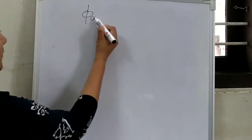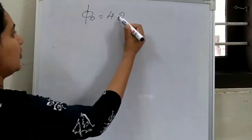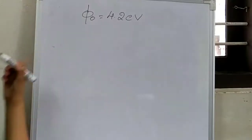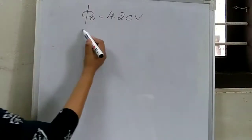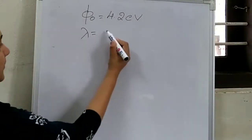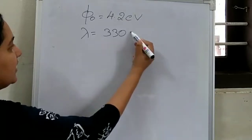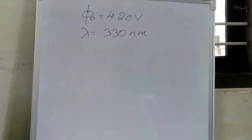It is given that the work function φ₀ is equal to 4.2 electron volt and the wavelength of the incident light λ equals 330 nanometer. One is in electron volt, another one is in nanometer.